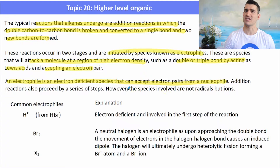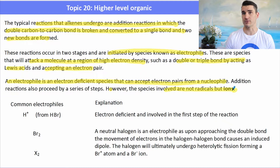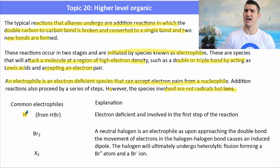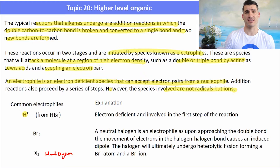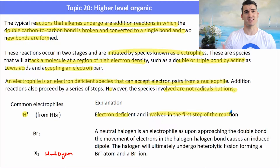Addition reactions proceed in a series of two steps and they involve ions, not radicals. A common electrophile is a H⁺ ion, but two other species commonly used in an addition reaction are Br₂ or X₂ — a halogen. Those don't look like electrophiles, but in fact they are, and we'll talk about why in a second. H⁺ is certainly electron deficient, it's an ion, and it's involved in the first step of the reaction.